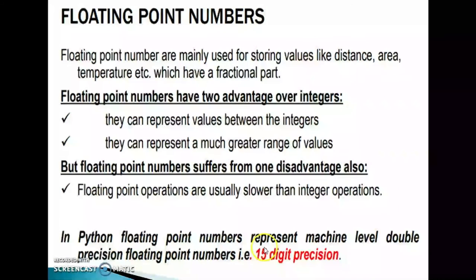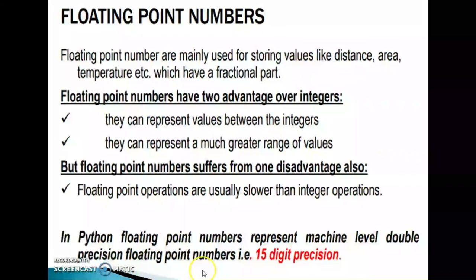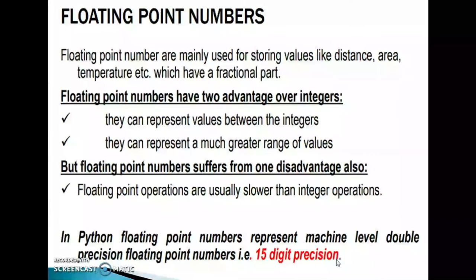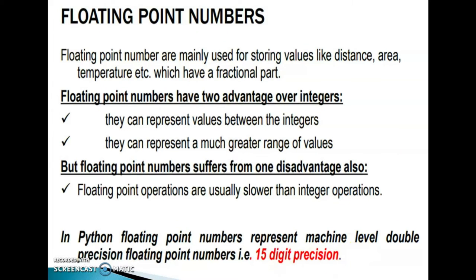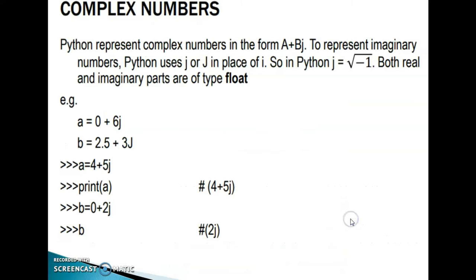In Python, floating point numbers represent machine-level double-precision floating point numbers, that is, 15-digit precision. In Python, we can identify up to 15-digit precision for a floating point number.